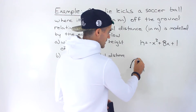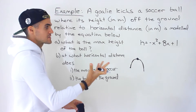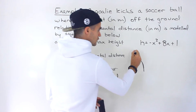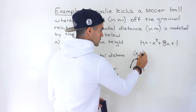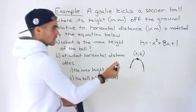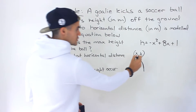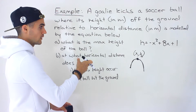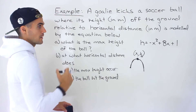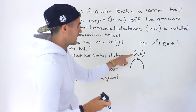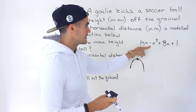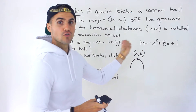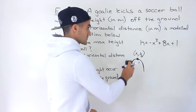So in part A, they're asking for the vertex — more specifically, they're asking for the h value of the vertex, because the vertex is going to be a coordinate in terms of x and h. They're asking for that h value: what is the maximum height going to be? In order to get that, we can take this standard form quadratic and convert it to vertex form.